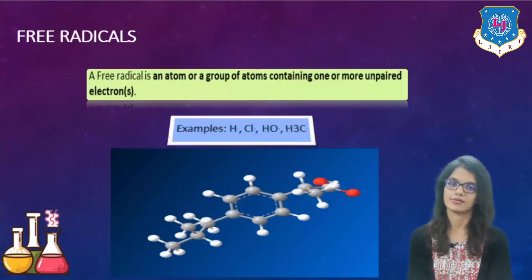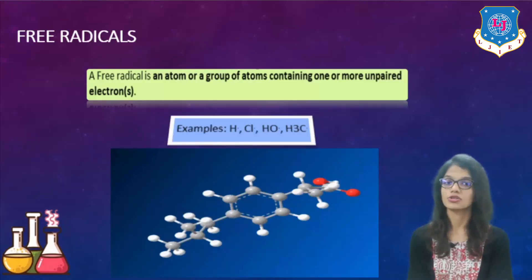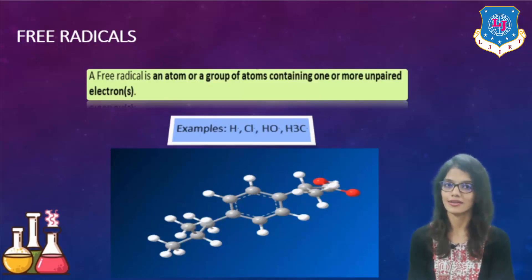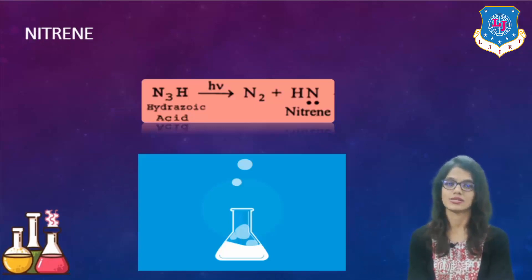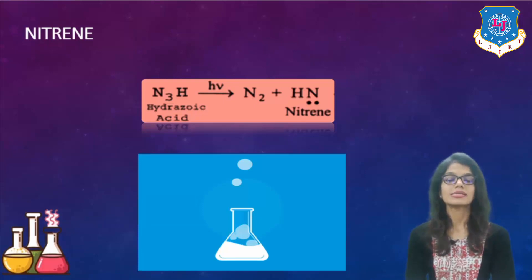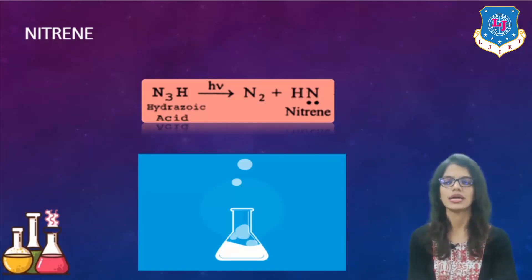Next, free radicals. Free radical formation is very common in organic reactions. A free radical is an atom or a group containing one or more unpaired electrons. Examples include H radical, Cl radical, OH radical, and CH3 radical. It just requires an unpaired electron on itself to be classified as a free radical. After that, nitrenes: when hydrazoic acid N3H is irradiated with UV light, it forms N2 plus NH double dot, which is basically a nitrene — NH which contains two electrons on itself.